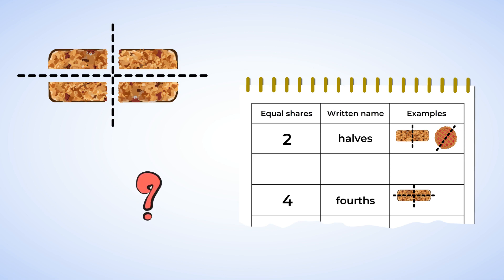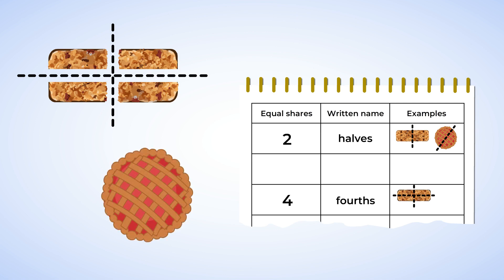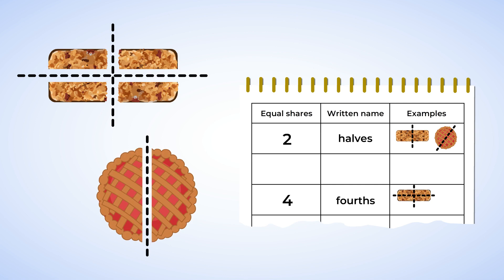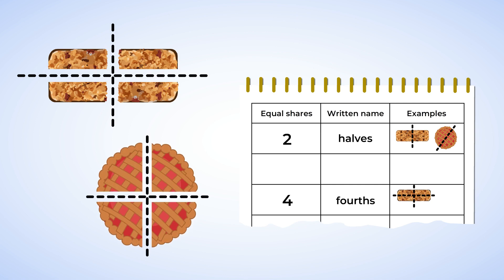Could we do the same thing with their apple pie? First, let's split it in half — that means two pieces. Then we split it in half again. We've cut this pie into fourths. Let's add this example to our notebook too.